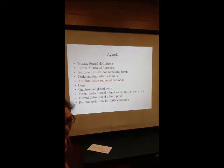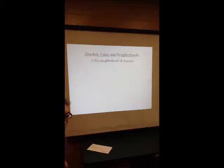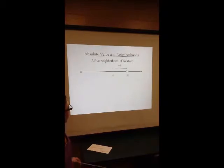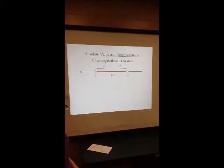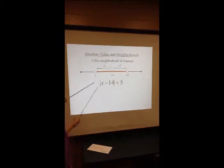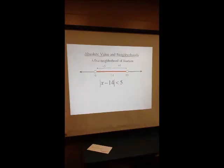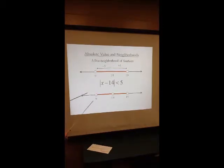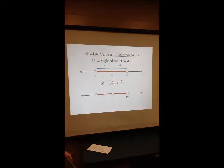We're going to begin with absolute value and neighborhoods. A 5-neighborhood of 14 includes all the values 5 above and 5 below 14, so it includes all the values between 9 and 19, but does not include the endpoints 9 and 19. It is represented using this notation. A deleted 5-neighborhood of 14 is the same, except it does not include 14 in the neighborhood, and is represented using this notation.